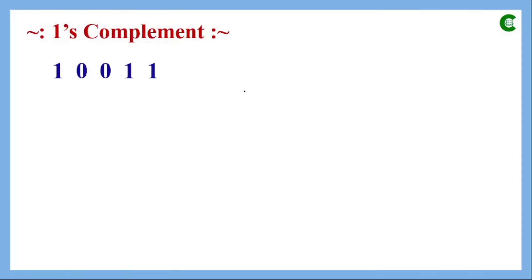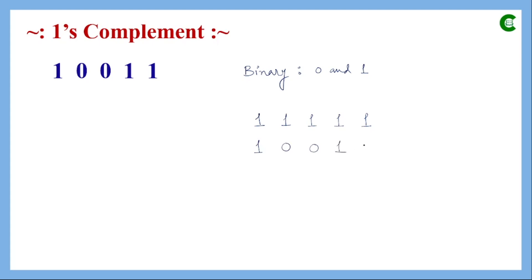One's complement and two's complement are used to represent a number given in binary number system. In binary, the possible values are zero and one, and one is the highest value. To find one's complement, we subtract the given number from a number having the same number of bits where all bit values are one. Here the number has five bits, so we take a five-bit number with all ones and subtract the given number 10011.